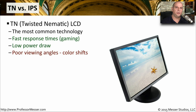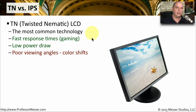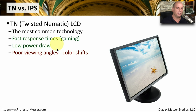You'll generally see two different kinds of LCD technologies. One is the TN, or Twisted Nematic LCD, a very common screen found on many displays. If you're a gamer, you'll like the TN LCD because you can get very fast response times down to the one or two millisecond level. It also doesn't use a lot of power. Unfortunately, it has a very small viewing angle — if you look at the edge of a TN LCD, the color inverts, so you have to be right in front of the monitor.